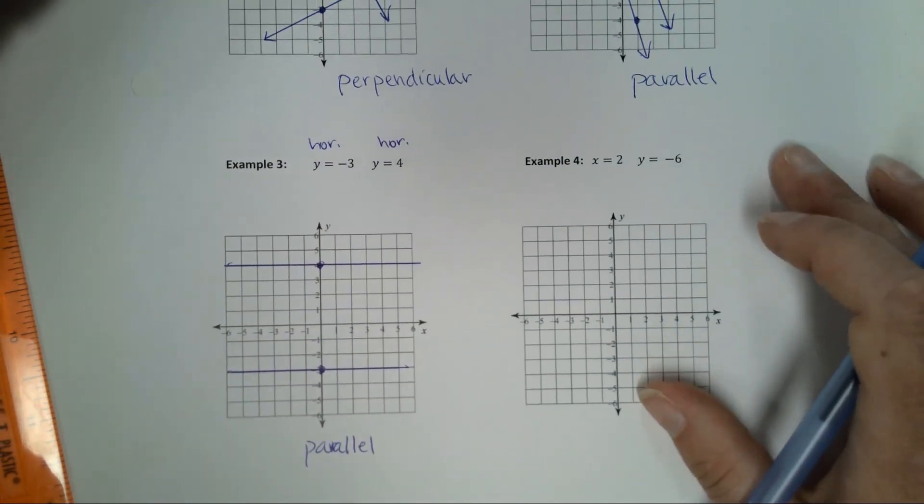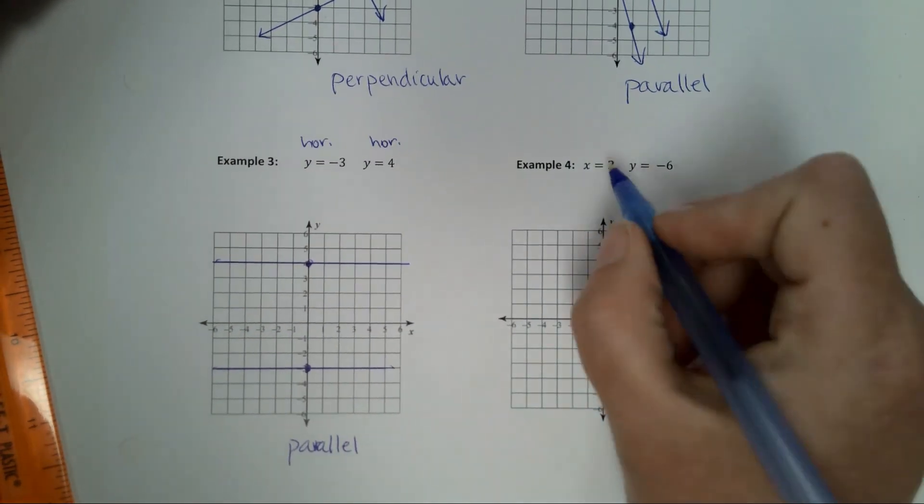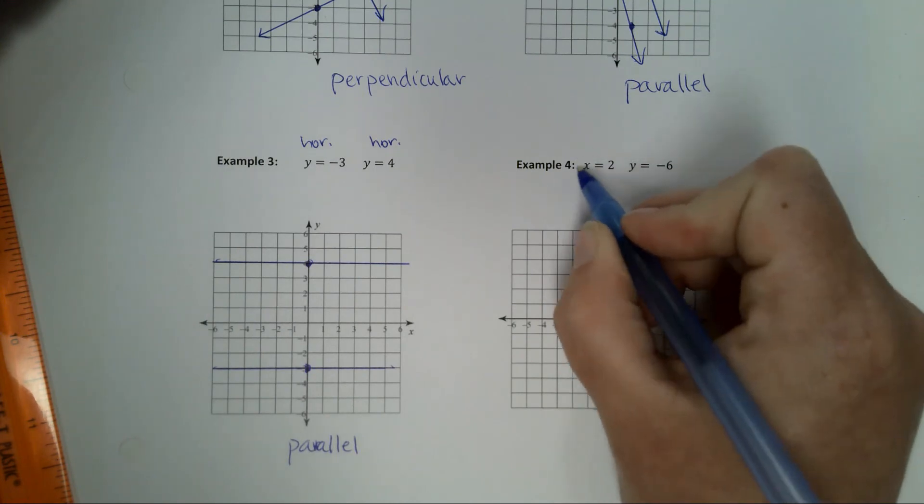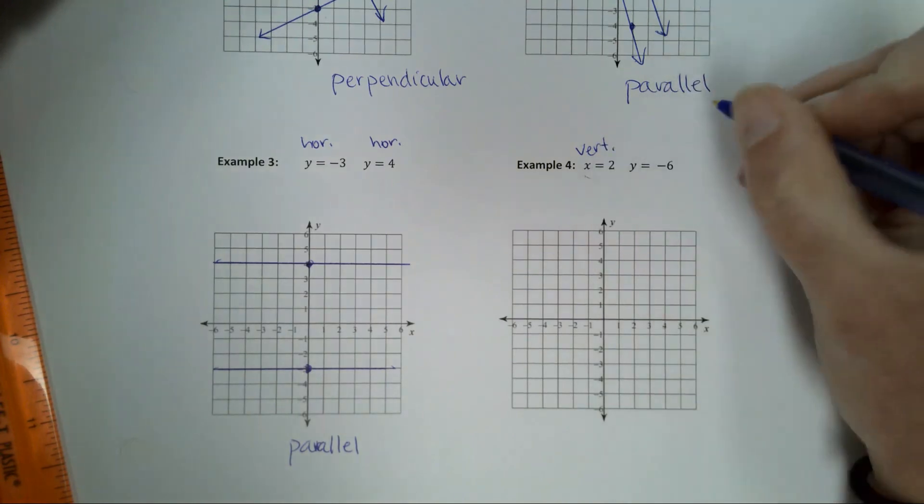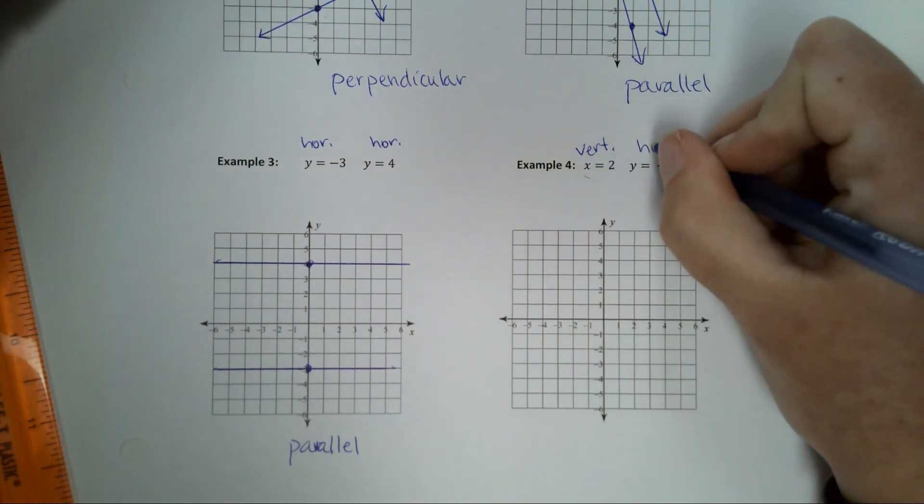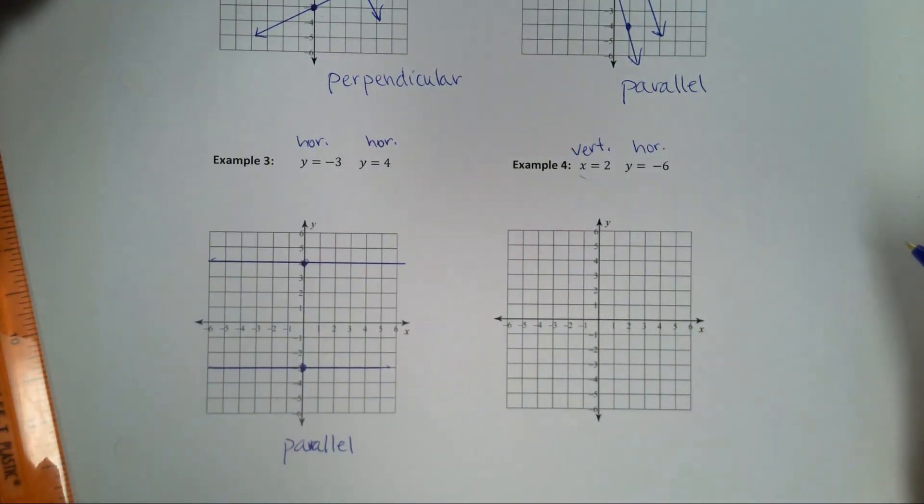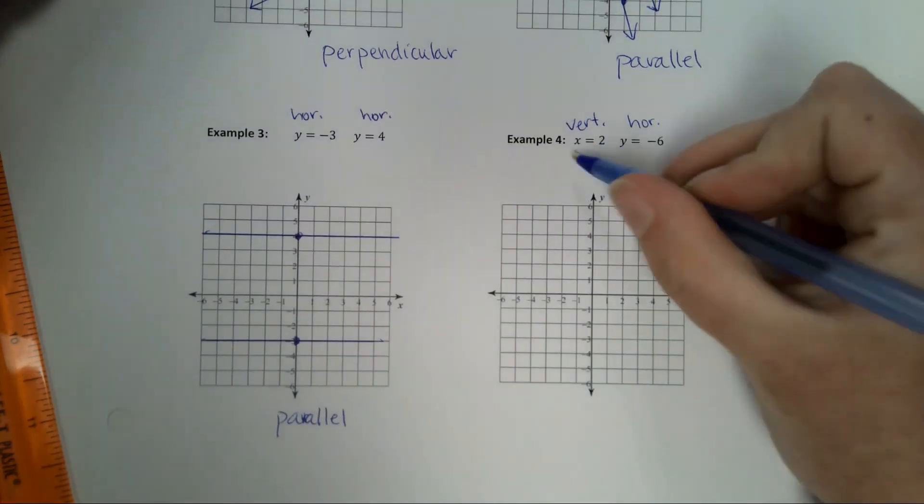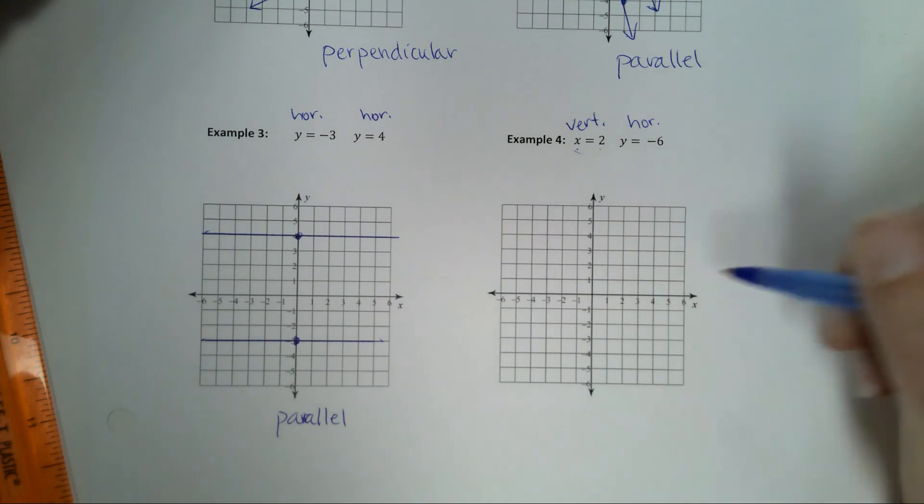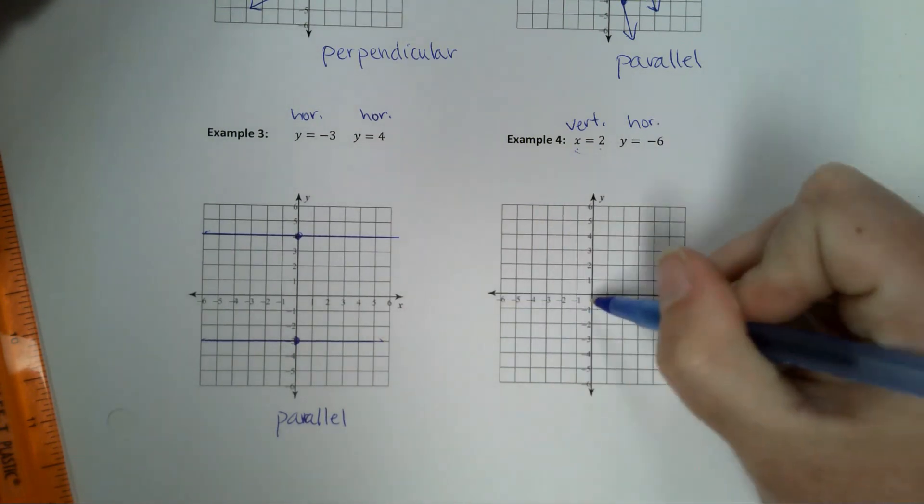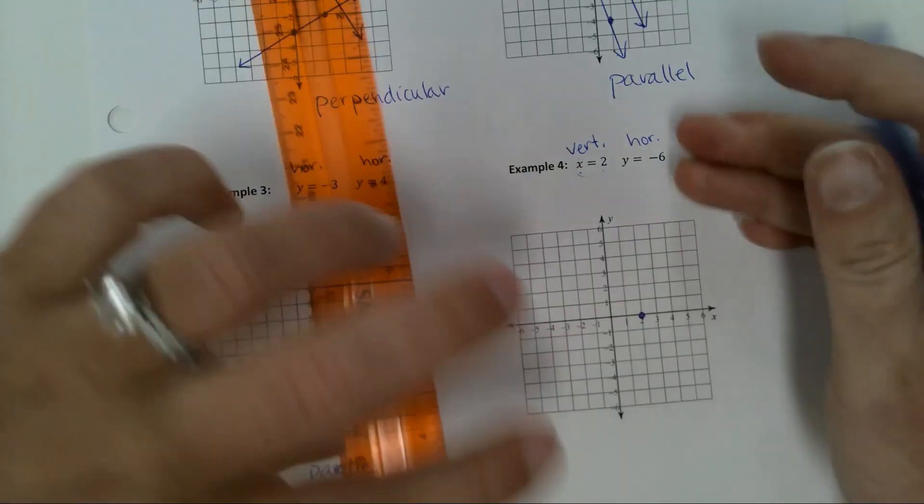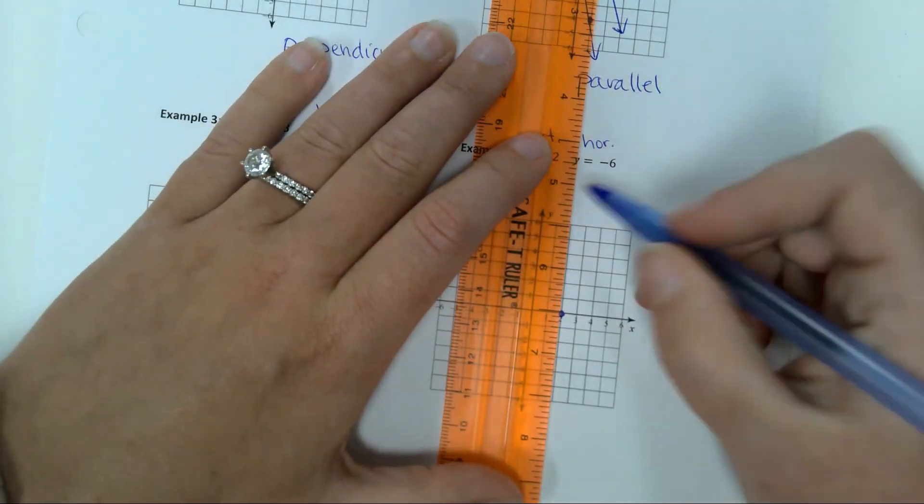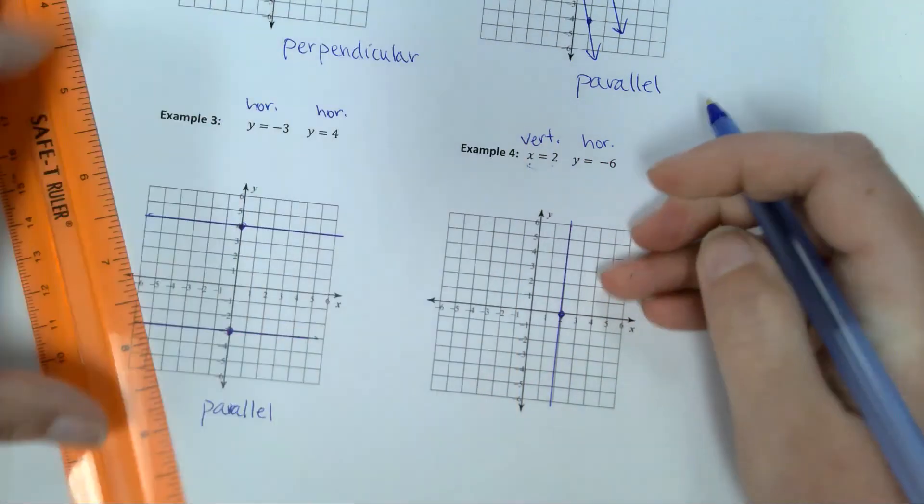And then example 4. This one's a little bit different. This is a what kind of line? Vertical. If it starts with x equals, it is vertical. But this one is horizontal. So, they hopefully will look perpendicular. This time I'm going to go to my x-axis to 2. Here's my x-axis. And I'm going to 2, right there. And I'm going vertical, which means up and down. Boom, there's the first one.